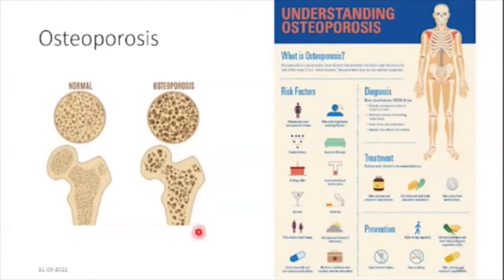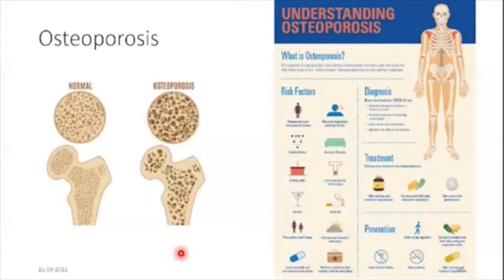Osteoporotic bone loss affects cortical and cancellous bone, and animal studies have shown this can result in decreased oral bone density and alveolar bone loss. Both bone resorption and formation are accelerated, and excessive bone resorption leads to loss of attachment — this can theoretically affect the rate of tooth movement. Treatment modalities include medication, exercise, a diet sufficient in calcium and vitamin D, lifestyle changes, and bisphosphonate medications.